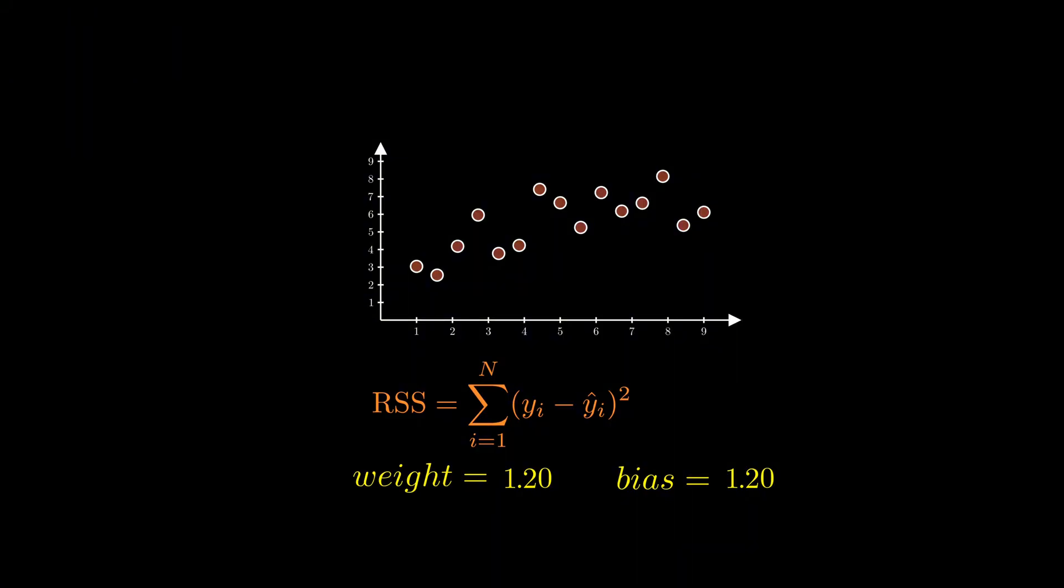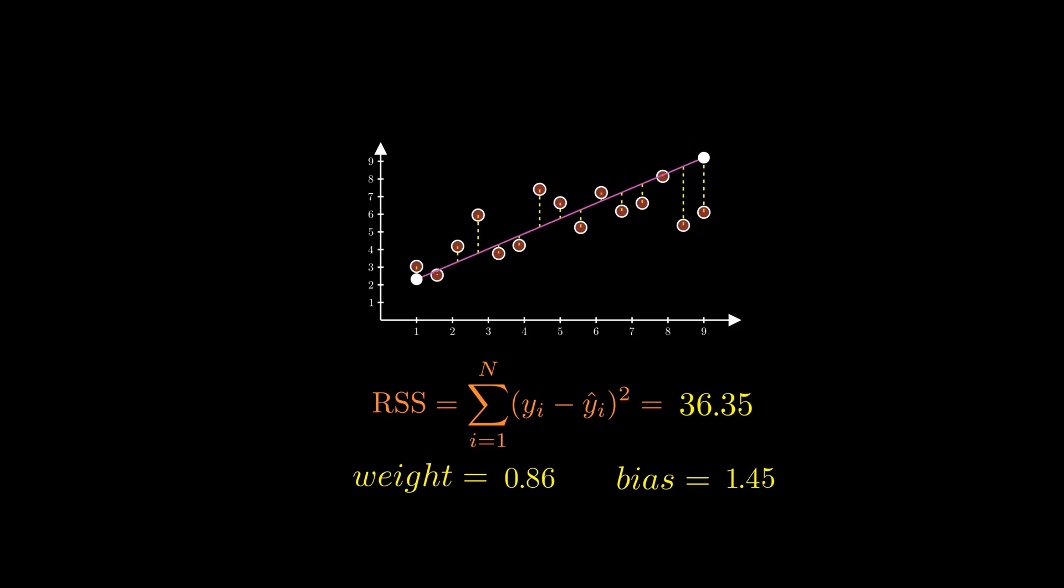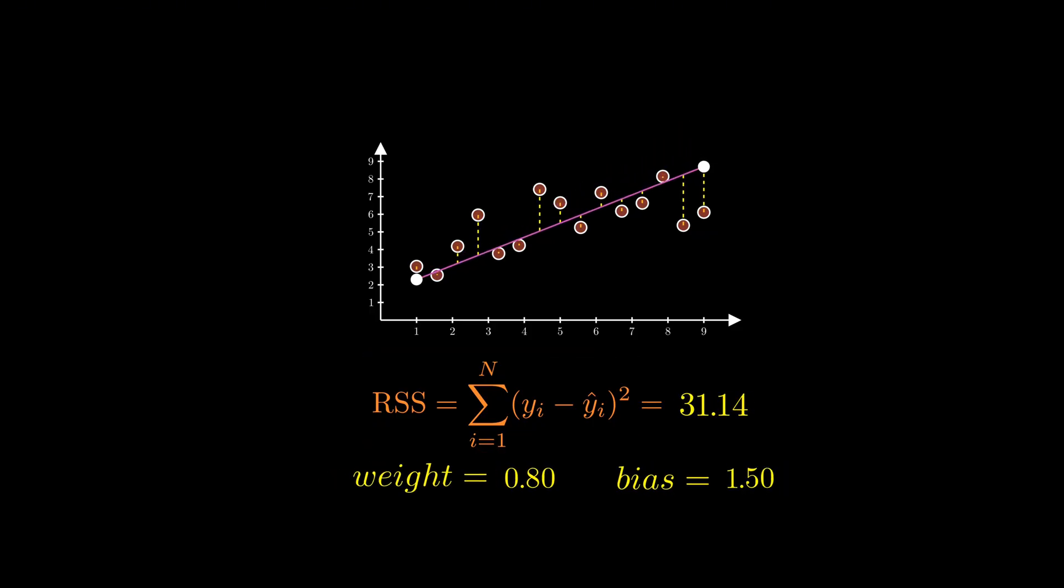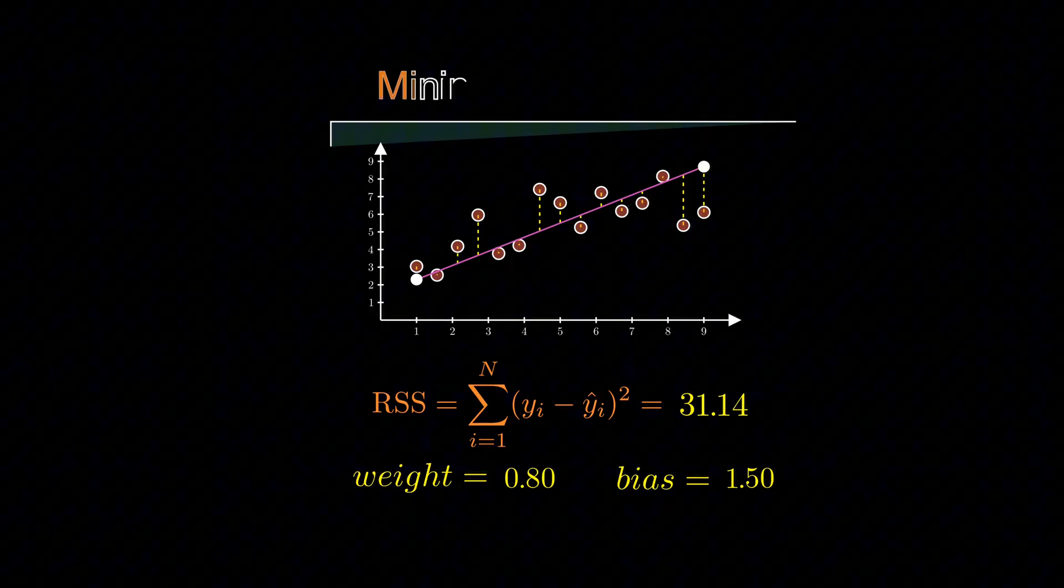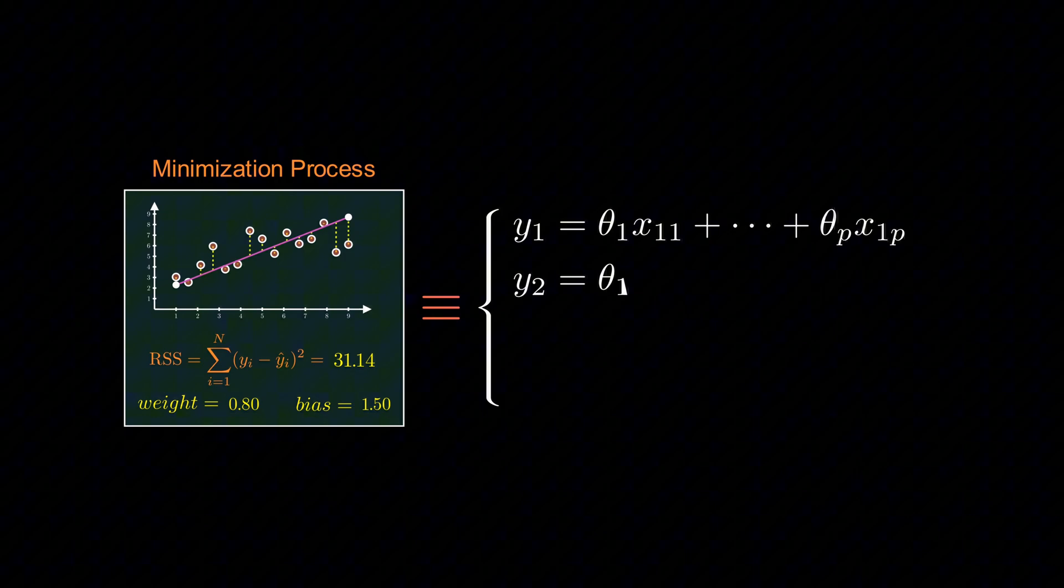In machine learning, we do something very similar. We fit models to data by minimizing error, often called the loss function, to find the best parameter values. This minimization process is really just a numerical replacement for analytically solving a system of equations.